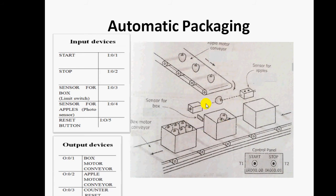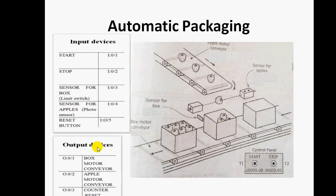For identifying input and output ports in automatic packaging: the start and stop button are inputs for the motors. The first sensor is for detecting the box, and the second sensor is for counting apples. These are the input ports. Output ports are: first output for the box motor conveyor, second output for the apple motor conveyor, and third for the counter.